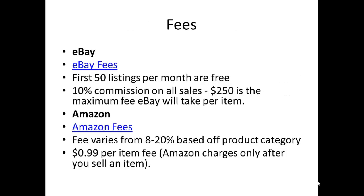Fees. eBay fees: the first 50 listings per month are free, and they charge a 10% commission on all sales with a $250 maximum fee per item. Amazon fees vary from 8% to 20% depending on the product category, and Amazon also takes a $0.99 per item fee — but Amazon only charges you after you sell your item.